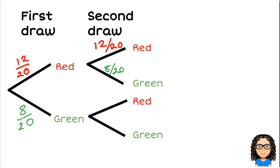And equally if I draw a green counter first I would still have a chance of 12 out of 20 to get a red one on the next draw, or a probability of 8 out of 20 to get a green one.